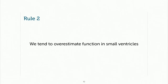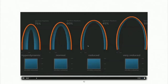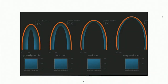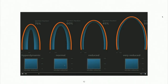We tend to overestimate function in small ventricles. Why is that so? Here's a video that will explain this to you. Now observe these four different ventricles, each with a different size and a different electrical function, and we'll look at the stroke volume.